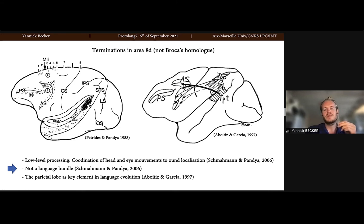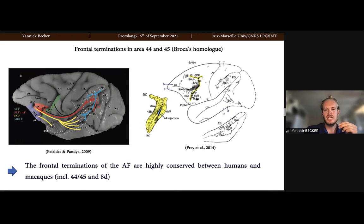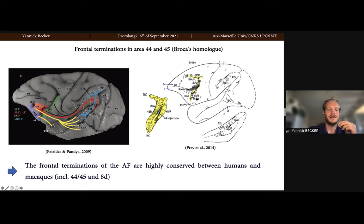Such low-level processes in monkeys were seen as an evolutionary gap with the high-level language functions of the human AF. In other words, the AF was questioned as playing a crucial role in language processing. Aboitiz and Garcia proposed therefore that the parietal lobe may have played a fundamental element in language evolution, indirectly linking key structures. In that view, it permitted the development of an interface between the auditory processing device and a working memory circuit for complex vocalization. This changed when Broca's homolog was found in monkeys — tracking from these injection sites, they found three different branches connecting areas 45, 44, and areas 6 and 8.